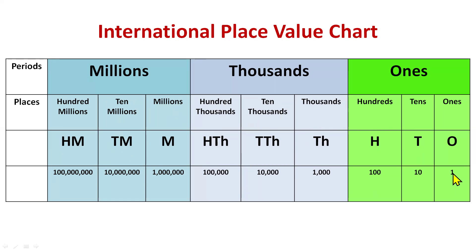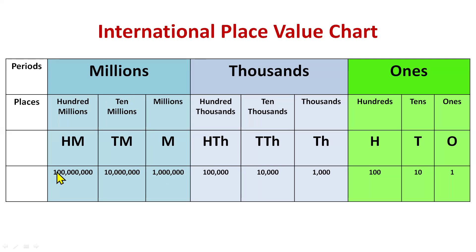We will use the shortcuts going forward and not write the full forms. In numeral form, ones is written as 1, tens as 10, hundreds with two zeros, thousands with three zeros, ten thousand with four zeros, then five zeros, six zeros, seven zeros, and eight zeros.